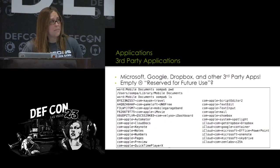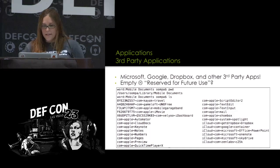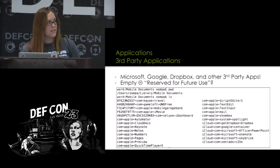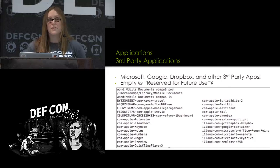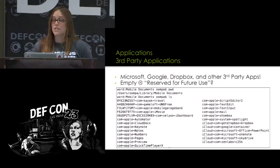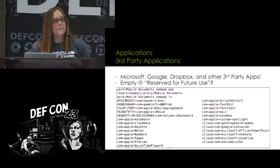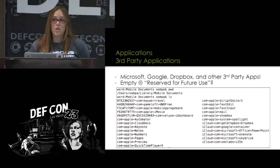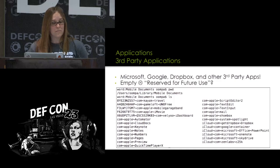Now we're down to third-party applications. In some of these screenshots you've seen things like com.getdropbox, Microsoft Office PowerPoint, OneNote, SkyDrive — these look like they could be reserved for future use. I tried playing with the applications to populate that data, but they all seem to be empty. Even the absence of data can tell us something — you can see what applications I actually use just by looking at this list.